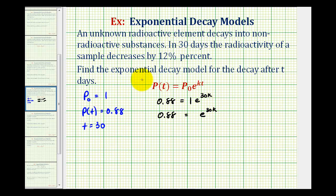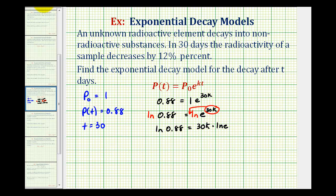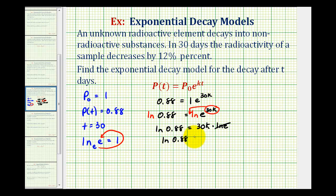To solve this exponential equation we'll take the natural log of both sides, then apply the power property of logarithms on the right side, moving 30k to the front. So we have: ln(0.88) = 30k · ln(e). Many textbooks leave off ln(e) because it equals one — natural log is log base e, so e^1 = e, which is why ln(e) = 1. Multiplying by one doesn't change anything, so we have ln(0.88) = 30k.